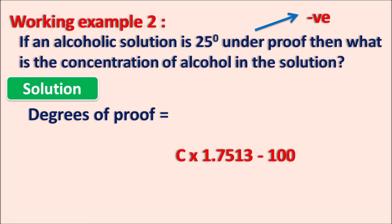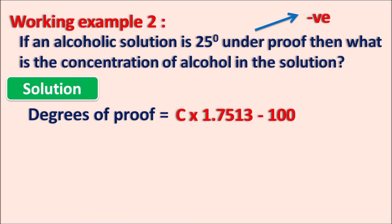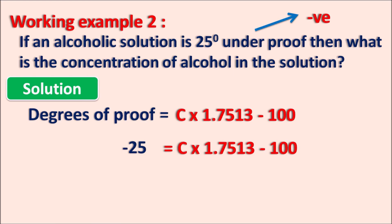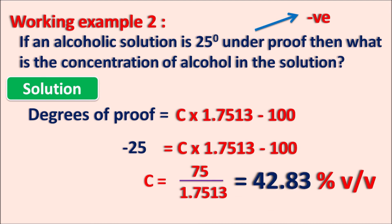Using the equation: degrees of proof = C × 1.7513 − 100, we substitute degrees of proof as −25. So: −25 = C × 1.7513 − 100. Bringing 100 to the other side: 100 − 25 = 75. Therefore, C = 75 ÷ 1.7513 = 42.83% v/v. This alcoholic solution is 42.83% v/v, and since it is less than 57.1%, it confirms it is an underproof solution.